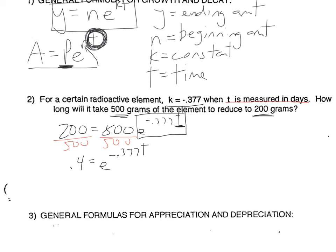Just like in math you can multiply both sides by 5, divide by 2, or subtract 1 from both sides and keep the equation equivalent, you can also log both sides. Now, if you notice we have a base of E, we don't want to just log both sides — we actually want to natural log both sides. Anytime you're solving an exponential equation and you have base E, you're going to want to take the natural log of both sides. If it was some other base, then you might want to take the regular log of both sides.